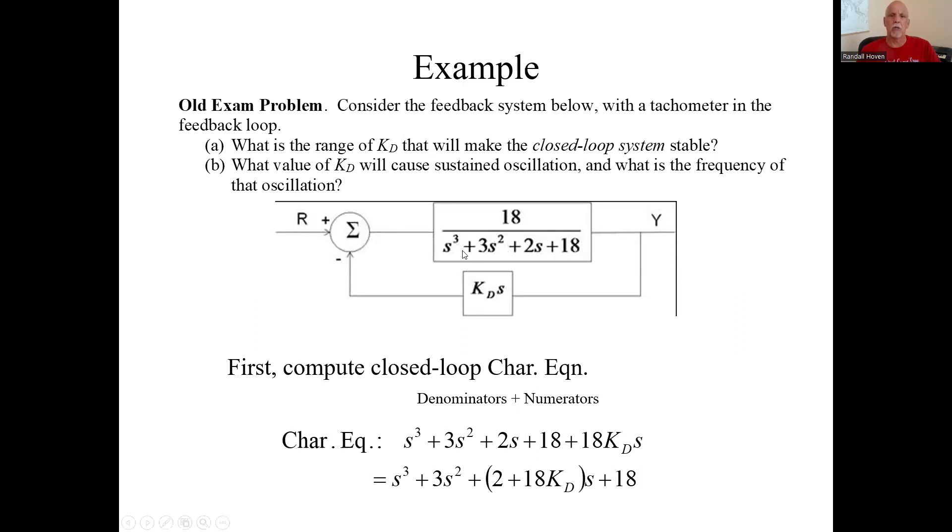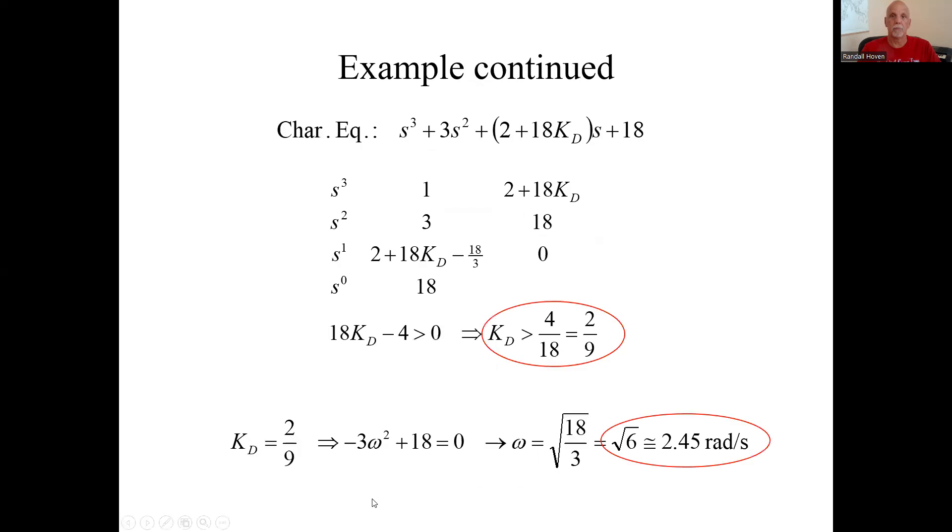How do you get that? Well, the simple algebra is it's this denominator times this guy's denominator, which is just one, plus product of the two numerators in case of K_D S. That's what this is. Find terms. Here's our characteristic polynomial. There it is again. Set up our Routh array. I'll have one, two plus two K_D, and that's it. Three, 18, that's it.